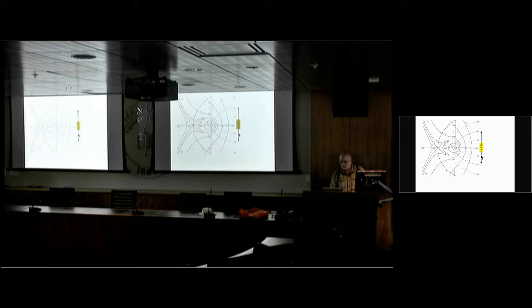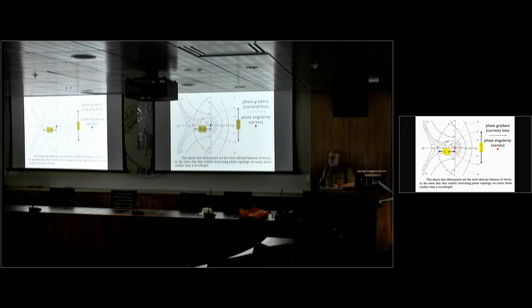So here's a more detailed picture, where this is half a wavelength. This is a path of a wavelength. And you see the phase singularity. These dashed lines, sorry, these arrows are the gradient lines. So they're perpendicular to the phase lines. And because they go round and round, that's why these things are called optical vortices. There's a detailed analogy between fluid vortices and optical vortices, which I won't go into. And so there it is. That's the singularity. And there's a saddle point there. You can see it. Good. So either in the original paper or a couple of years later, I made this comment. That this shows that dislocations are the most delicate features of waves in the sense that they exhibit interesting phase topology on scales much smaller than a wavelength.